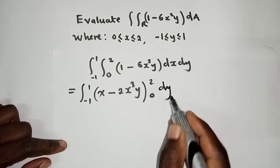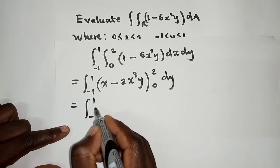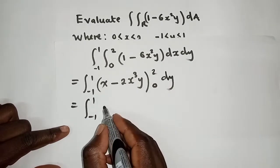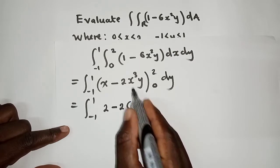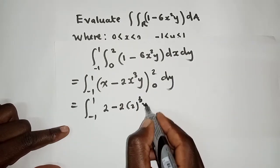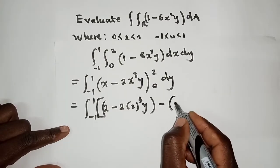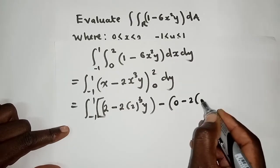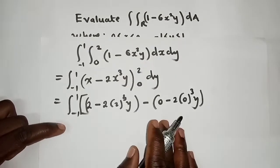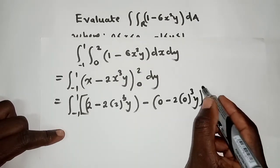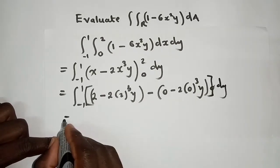Now since we have put our limits we can now replace. So have a 2 here where X is, a 2 right here power 3Y. For the lower limit we have 0 minus 2 open bracket 0 here power 3Y and close dY right here.